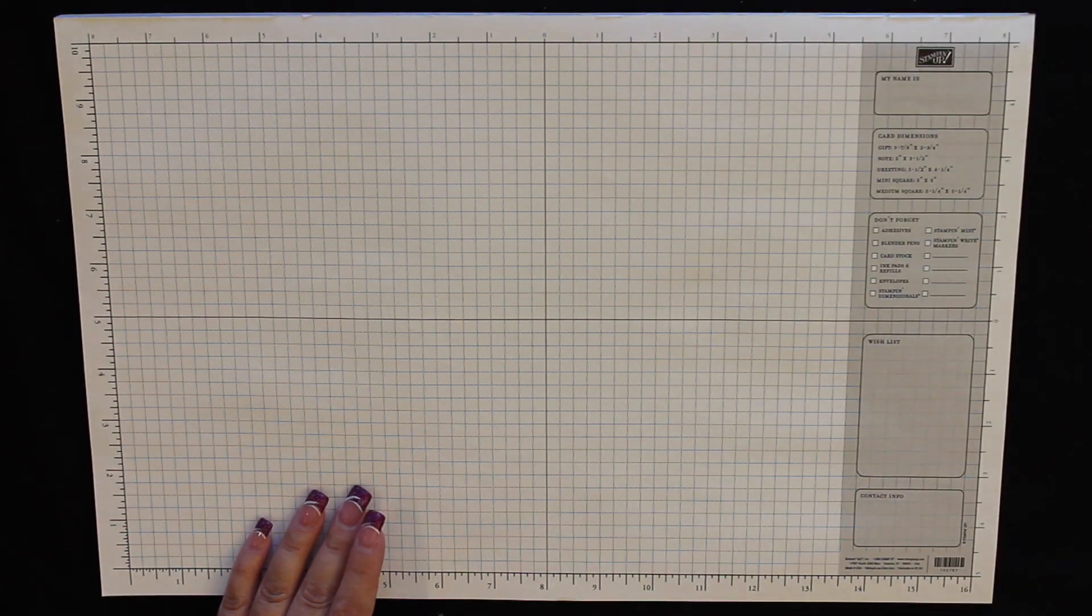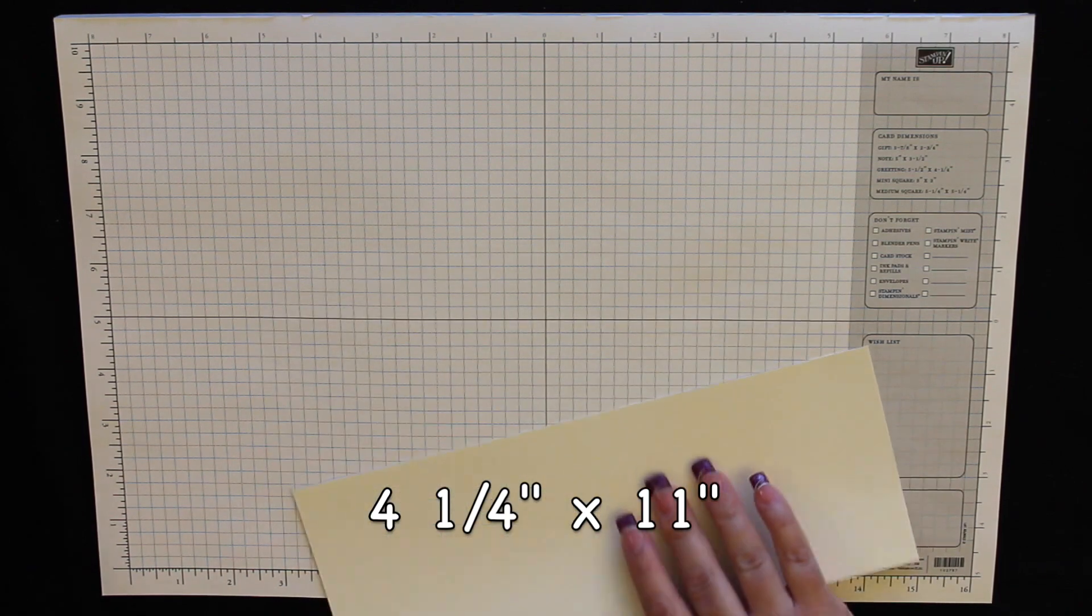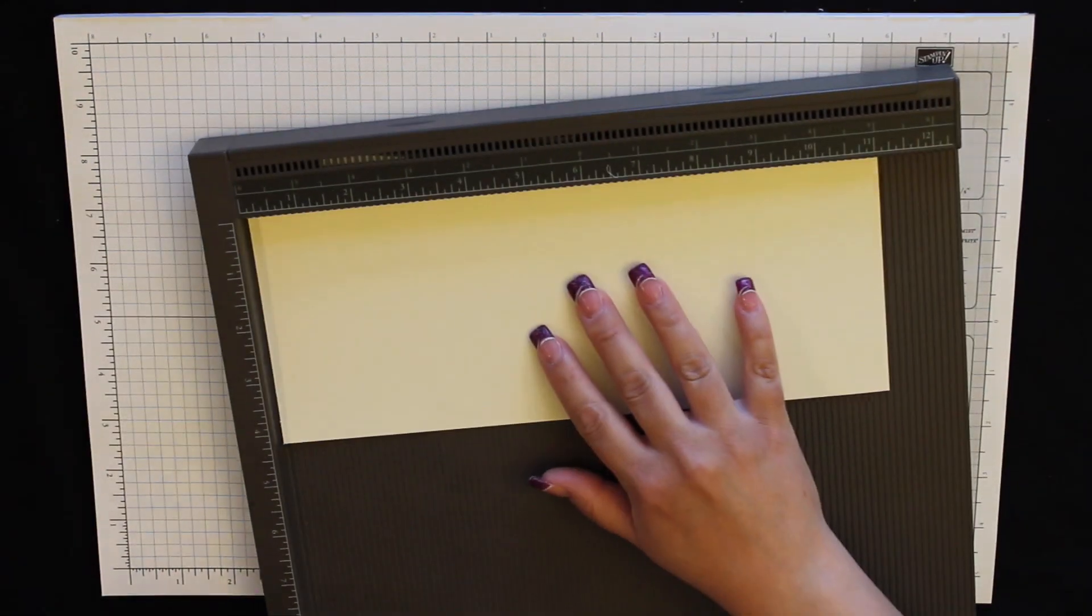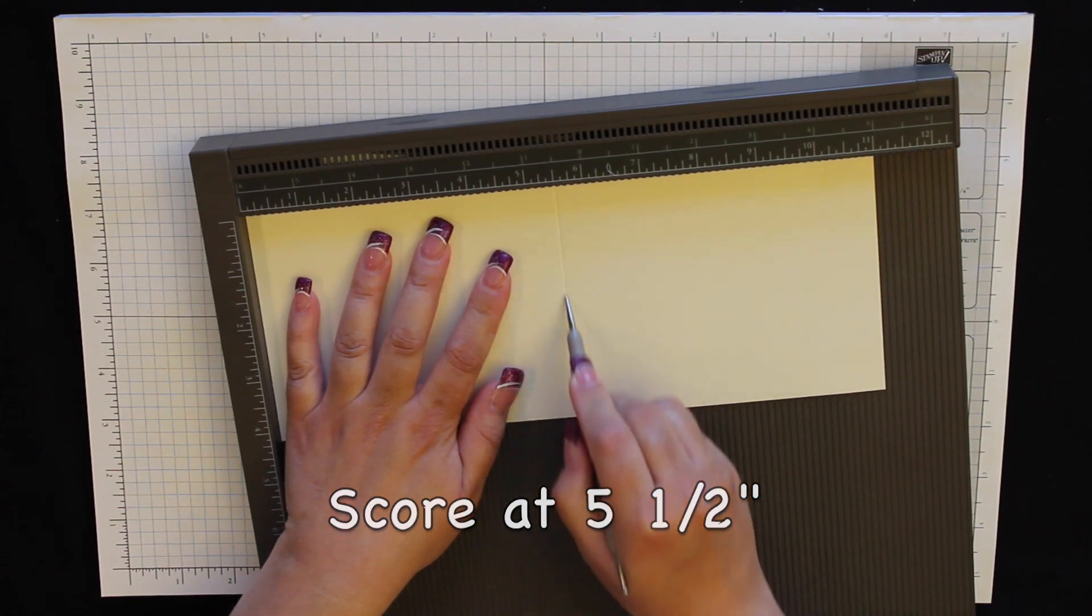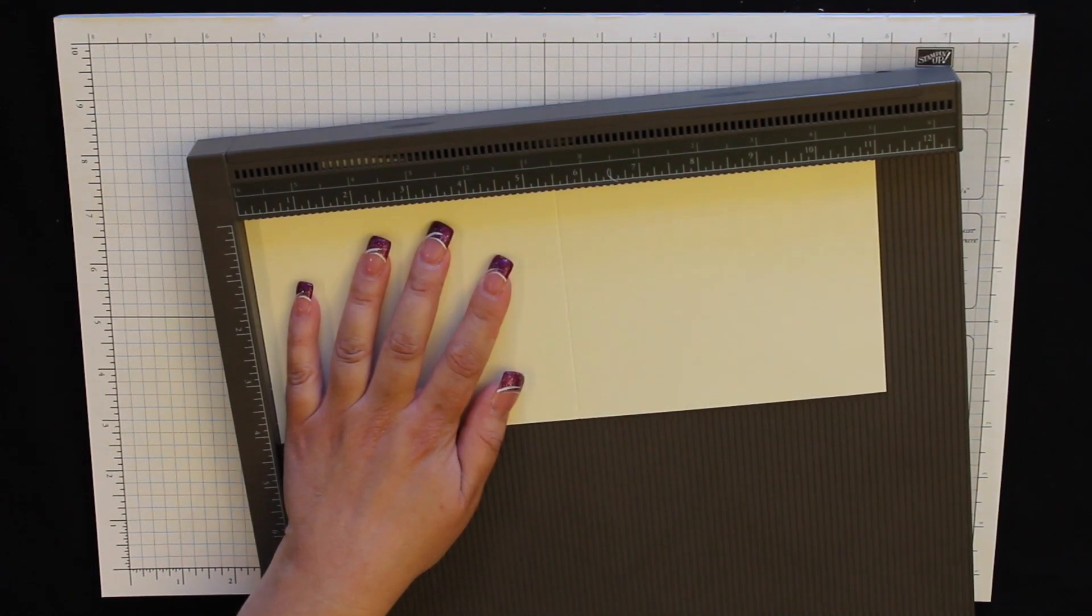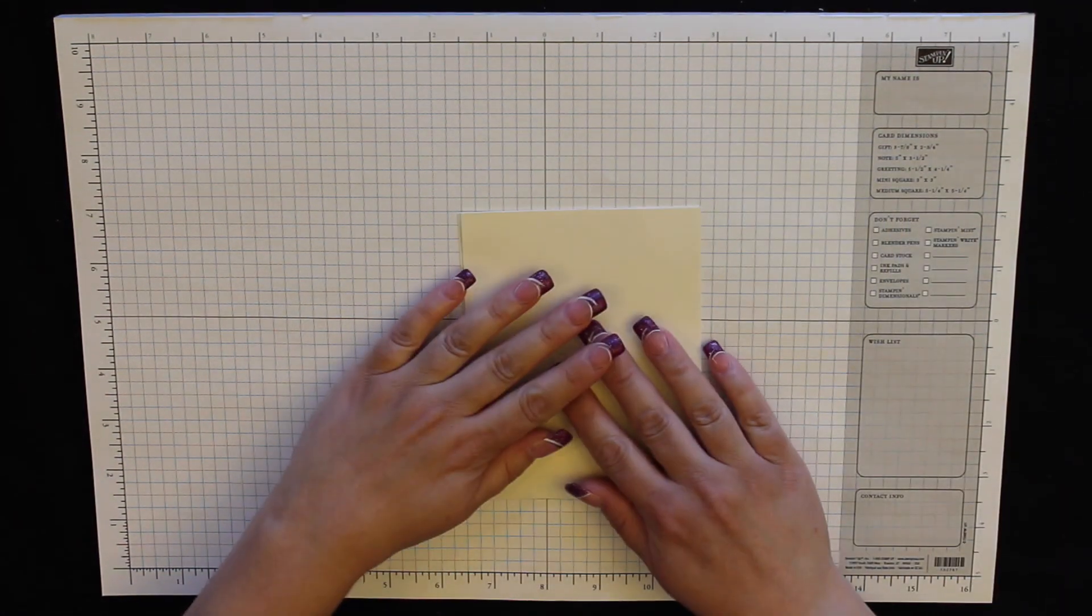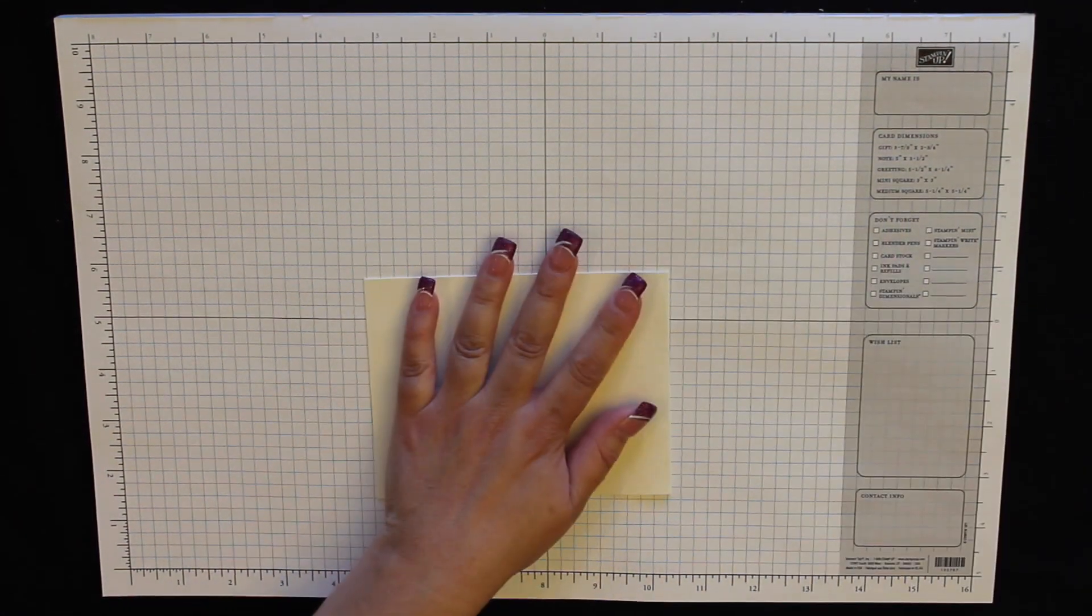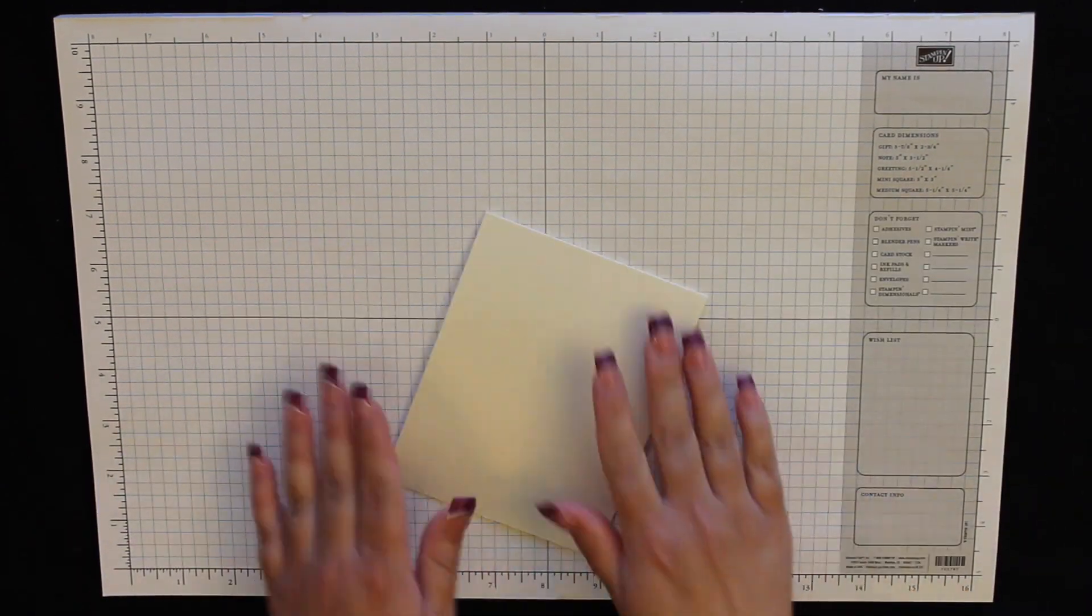So to start with you need a piece of very vanilla cardstock. This measures four and a quarter by 11 inches. I'm going to score that in half at five and a half inches. I'm going to take my bone folder and go over that crease so it stays nice and closed.